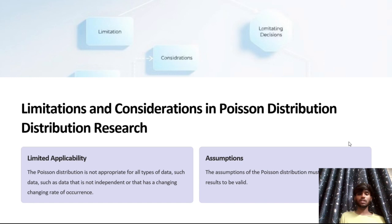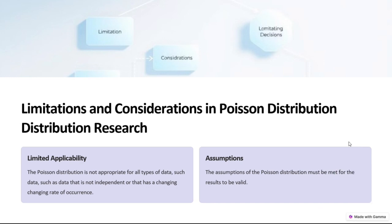Limitations and considerations of Poisson distributions: limited applicability — the Poisson distribution is not applicable for all types of data, such as data that is not independent or that has a changing rate of occurrence. The assumptions of the Poisson distribution must be validated. Thank you for watching this video.